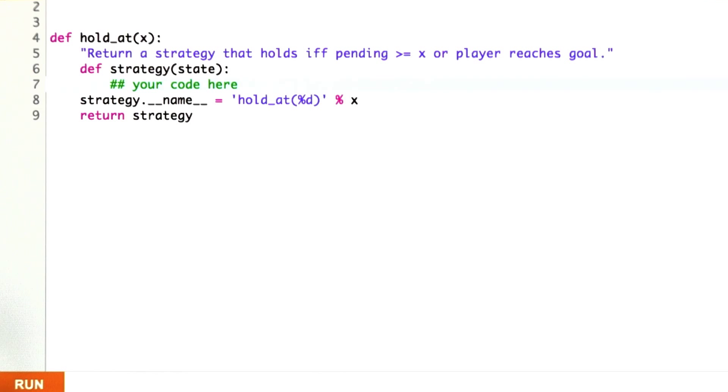And you have to write the code within the strategy function. And I should say we're going to stick with the representations of states, where a state is a 4-tuple of the player to move, 0 or 1, me and you score, and the pending score.